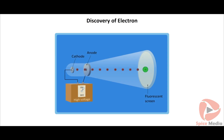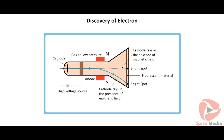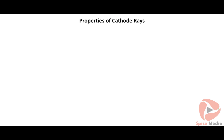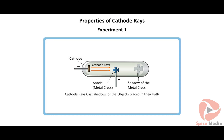J.J. Thompson found that when a high voltage of 10,000 volts was applied between electrodes in a partially evacuated cathode ray tube at a pressure of 0.01 mm of mercury, a bright spot of light was formed on a screen coated with fluorescent material at the other end of the tube. The fluorescent material glowed because it was struck by rays originating from the cathode. Since these rays were emitted by the cathode, they were later named electrons.